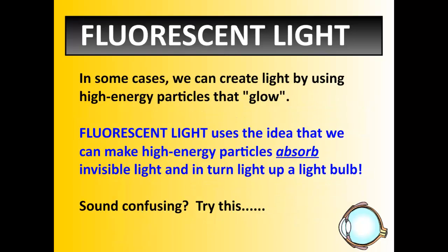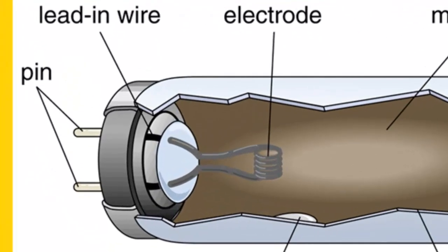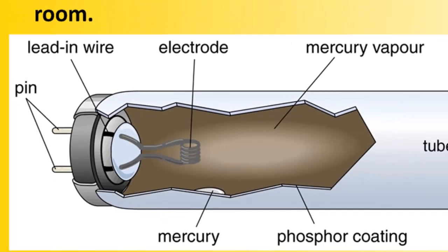The next type of light is called fluorescent. In some cases we can create light by using high energy particles that will glow. Fluorescent light uses the idea that high energy particles will absorb invisible light and turn it into visible light. Fluorescent bulbs are the ones you find in schools, shopping malls, or movie theaters — the long tubes with thin pins on either end. The two pins on the left have what's called an electrode attached to them. When those pins make contact with an electrical current, the electrode heats up, and that causes the mercury vapor inside to ignite — but it gives off invisible light that we can't see.